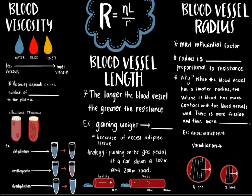Now we will go over the three main factors that affect resistance. First is blood viscosity, which is a measure of fluid consistency or thickness. For example, think of water, blood, and honey — honey is the most viscous, blood is significantly less viscous, and water is non-viscous. Resistance to blood flow is directly proportional to viscosity: the higher the blood viscosity, the higher the resistance, and the lower the blood flow. The viscosity of blood depends on the ratio of erythrocytes to plasma volume.